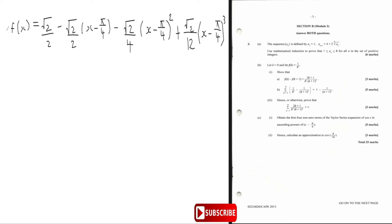So that's the first part — five marks. Now hence calculate an approximation for the cosine of pi by 16. We substitute x as pi by 16 into our Taylor series formula.